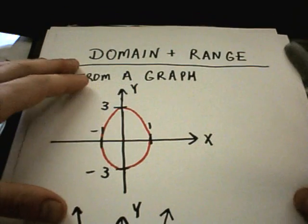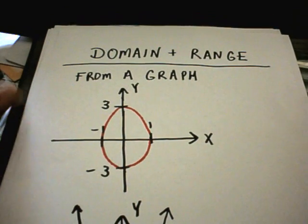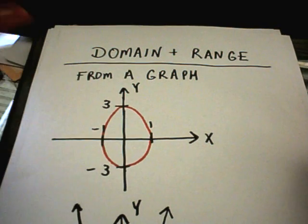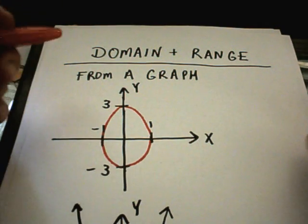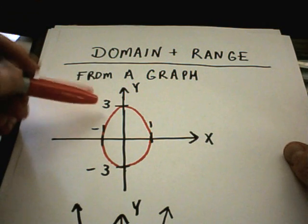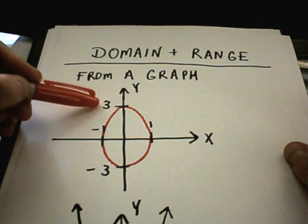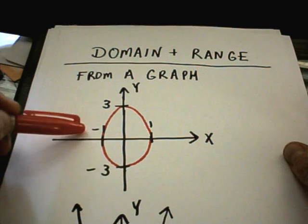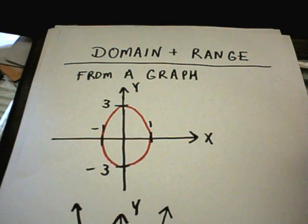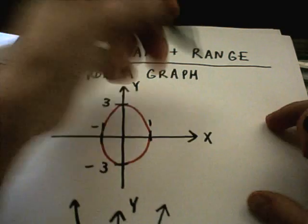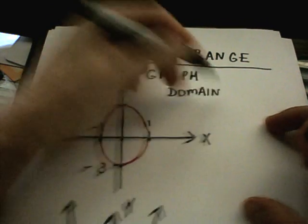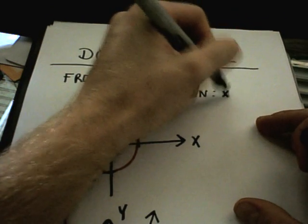Let's look at my first graph here — and you'll have to forgive my artistry, I am not an artist. Suppose this is an oval. It hits the y-axis up here at positive 3 and at negative 3, and it hits the x-axis at negative 1 and positive 1.